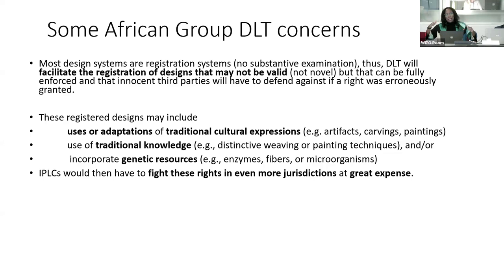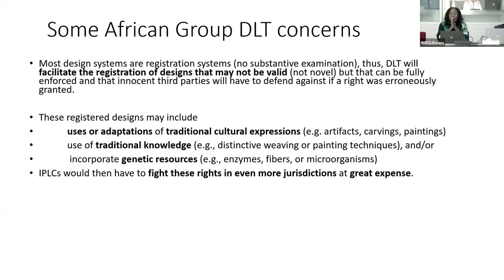The burden is then put on third parties to challenge that right. That is a choice that design law systems make — to put the burden as opposed to having substantive examinations to make sure that requirements like novelty and originality are met before the right is granted. And if we're talking about indigenous peoples, local communities, or designers in countries where they're developing TCEs and TK, then they have that burden to challenge that right. So having the possibility of requiring the disclosure of origin of these types of cultural and genetic resources is important, particularly in design systems that so often do not involve substantive examination.